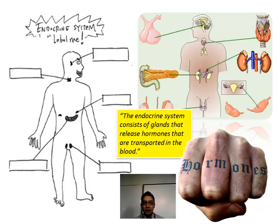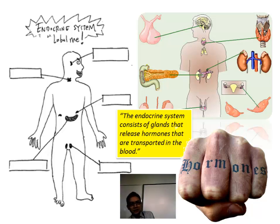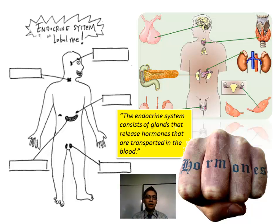the circulatory system, the respiratory system, the nervous system, and now we're looking at the endocrine system. The endocrine system doesn't get a lot of attention until you start thinking about hormones specifically.